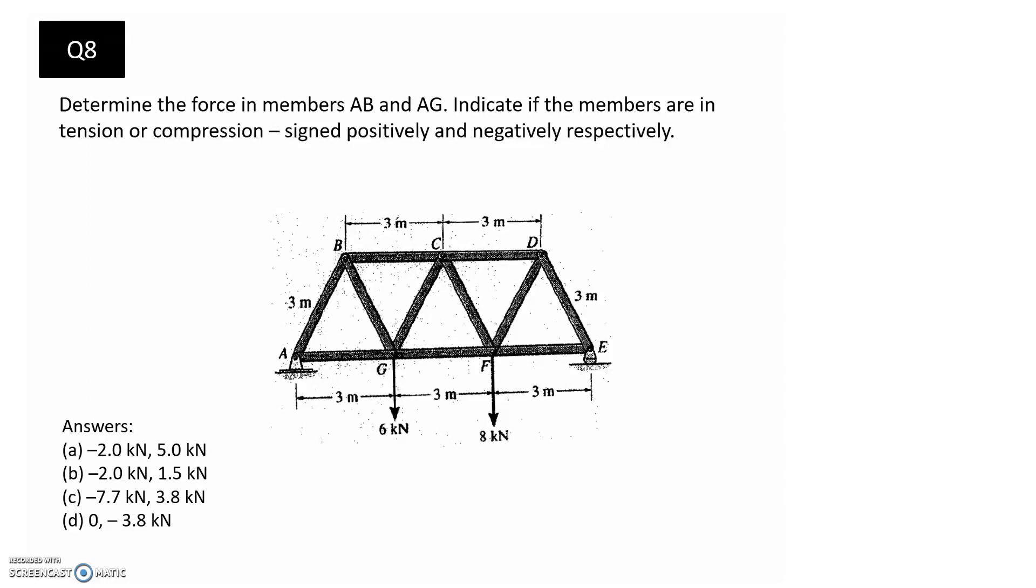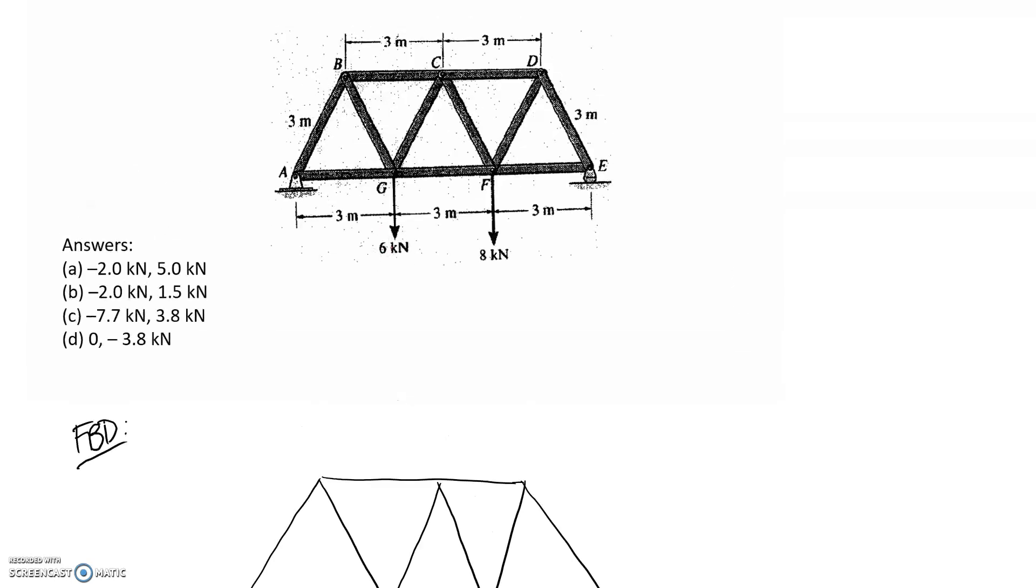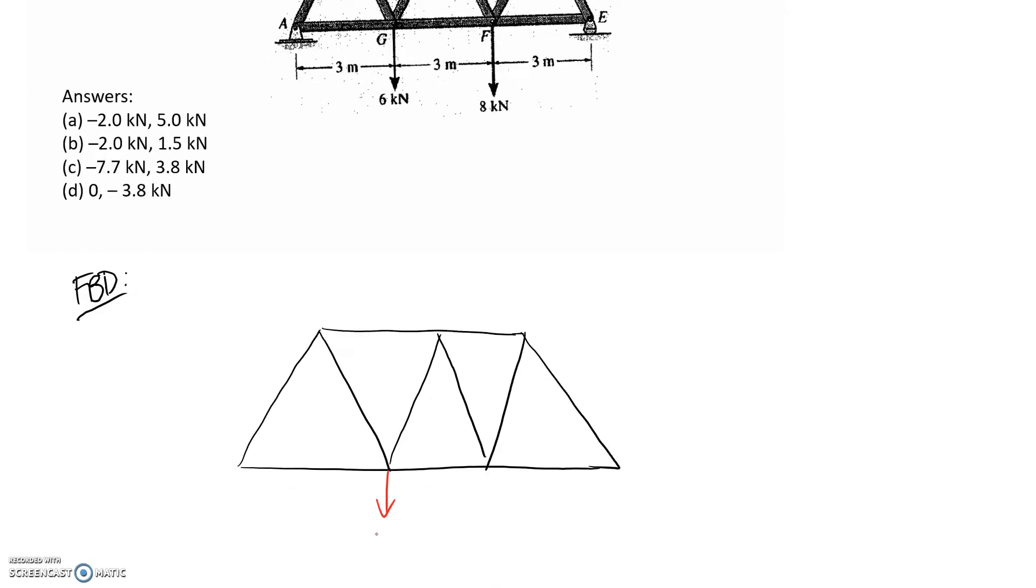The first step that we need to do is to draw the free body diagram of the overall truss. Scrolling down, I've copied a picture of what it looks like. So what we need to do is transfer down the external loads. We have the 6 kilonewtons acting here, and we also have the 8 acting here.